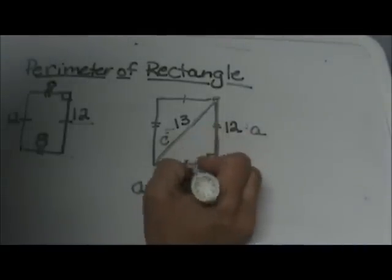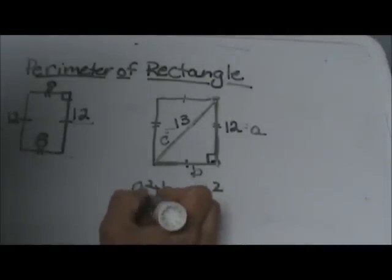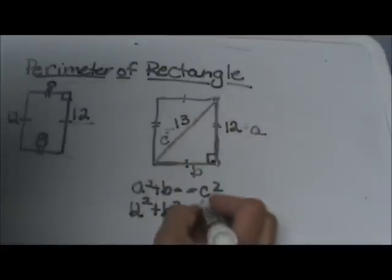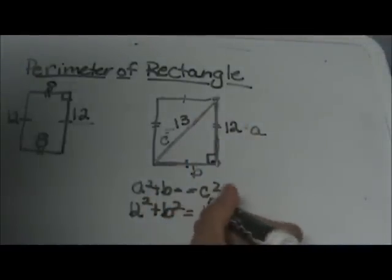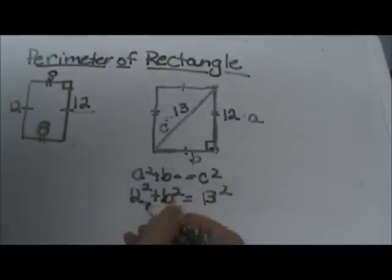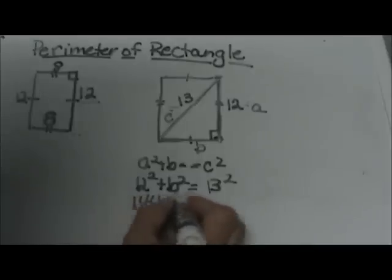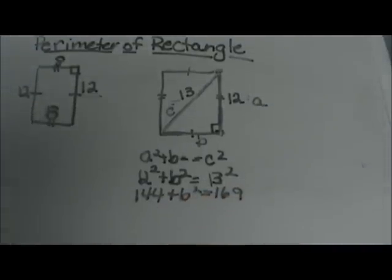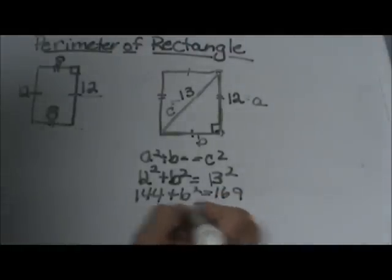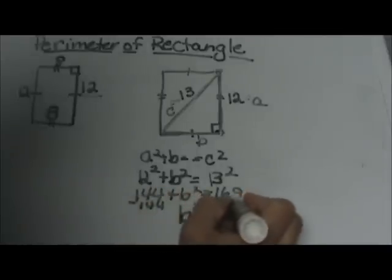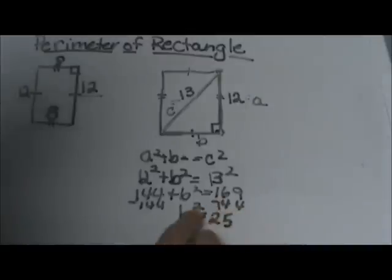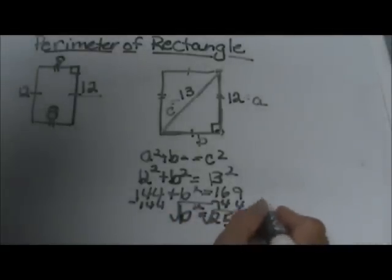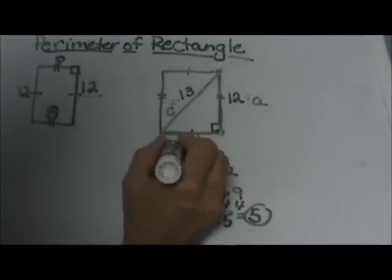So I am going to plug in 12 squared plus B squared — we don't know B, so we are going to leave that variable there — equals C, which is always the hypotenuse, the longest side: 13 squared. So we get 144 plus B squared equals 169. Subtract 144 from both sides, and B squared is equal to 25. To undo a square we take the square root, so the square root of 25 is just 5. So that means this side has to be 5.